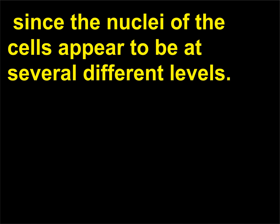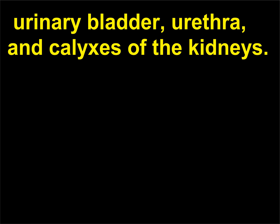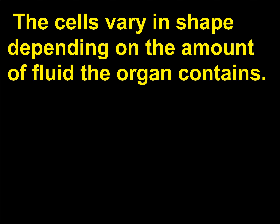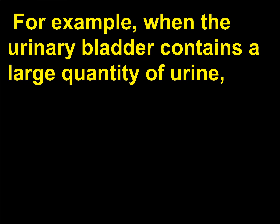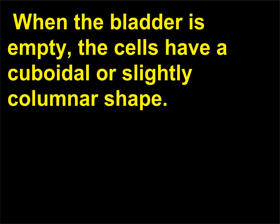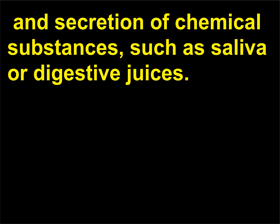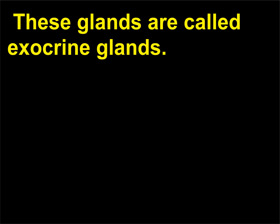Since the nuclei of the cells appear to be at several different levels. Transitional epithelium lines the urinary tract, including the ureters, urinary bladder, urethra, and calyxes of the kidneys. The cells vary in shape depending on the amount of fluid the organ contains. When the urinary bladder contains a large quantity of urine, the cells are stretched out and assume a flat, squamous appearance. When the bladder is empty, the cells have a cuboidal or slightly columnar shape. Glandular epithelium cells are specialized for the synthesis, storage, and secretion of chemical substances, such as saliva or digestive juices. These glands are called exocrine glands.